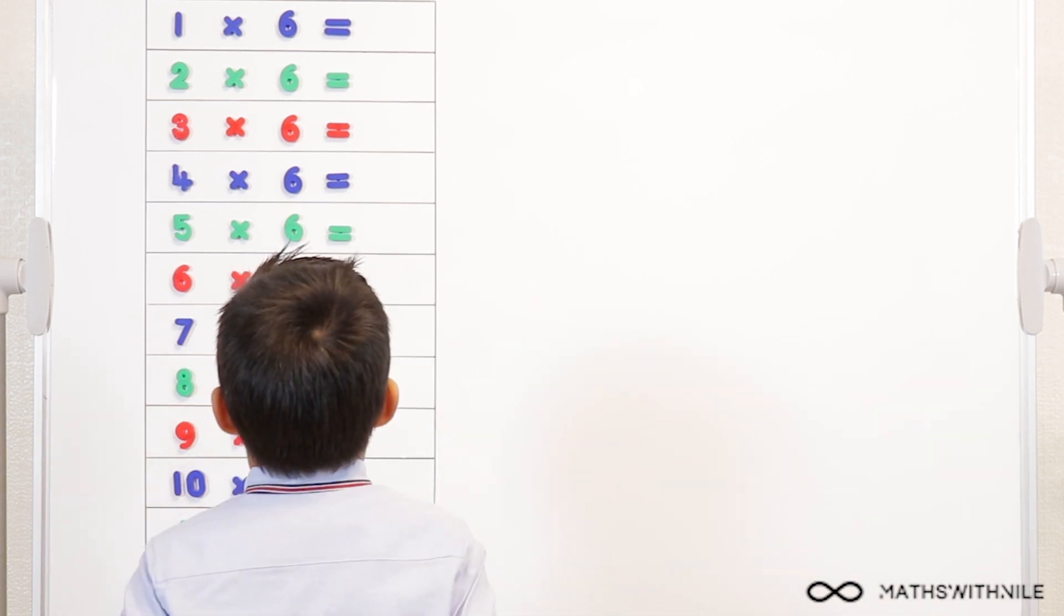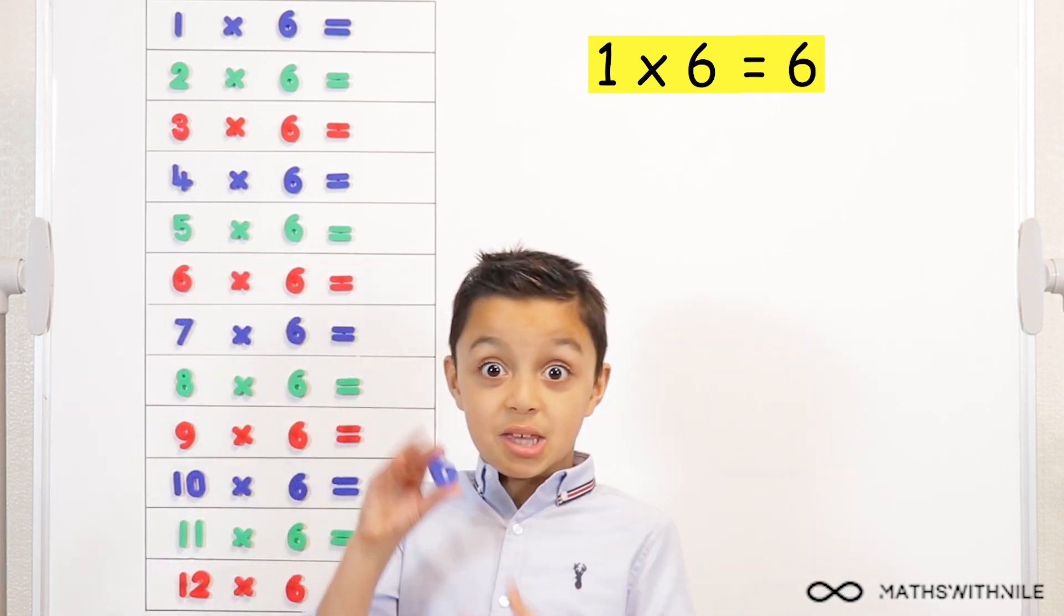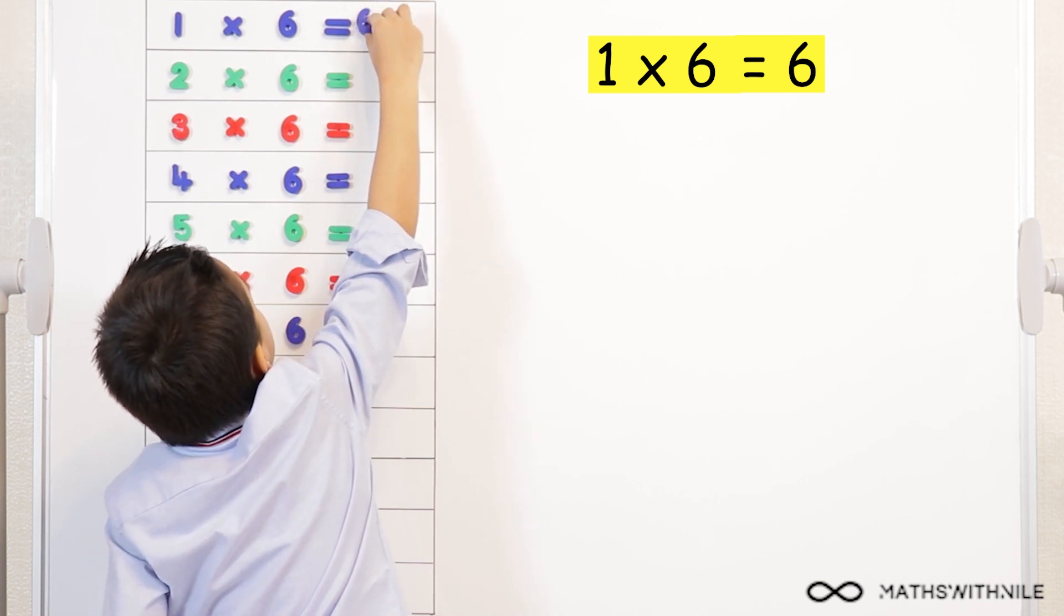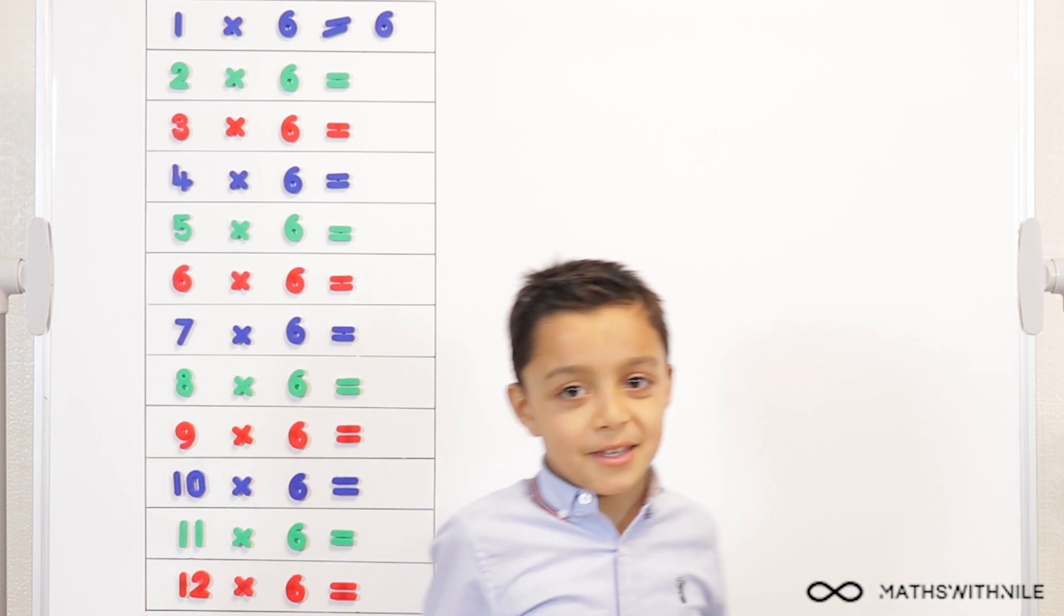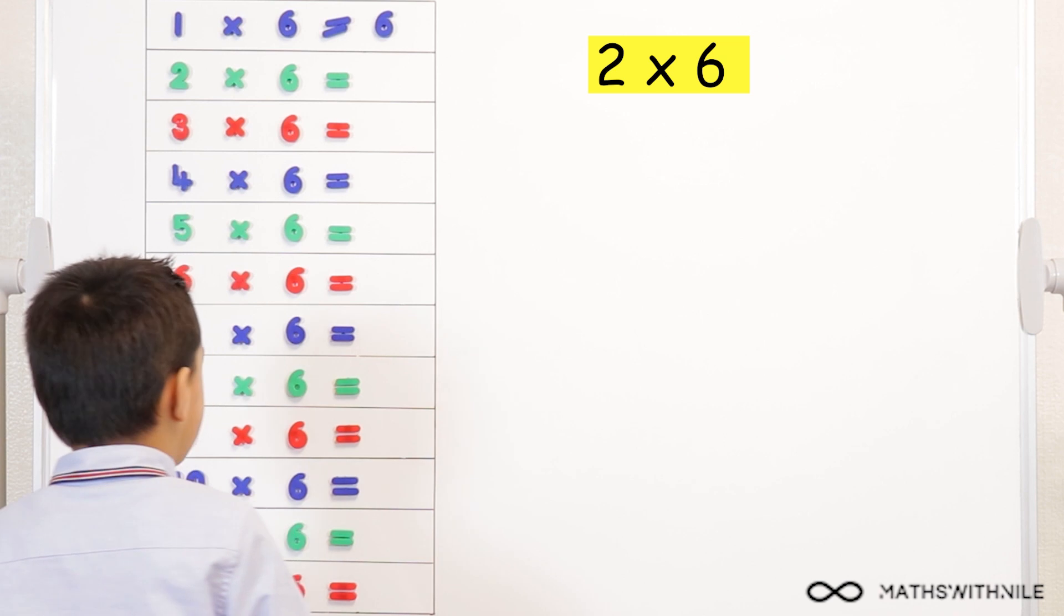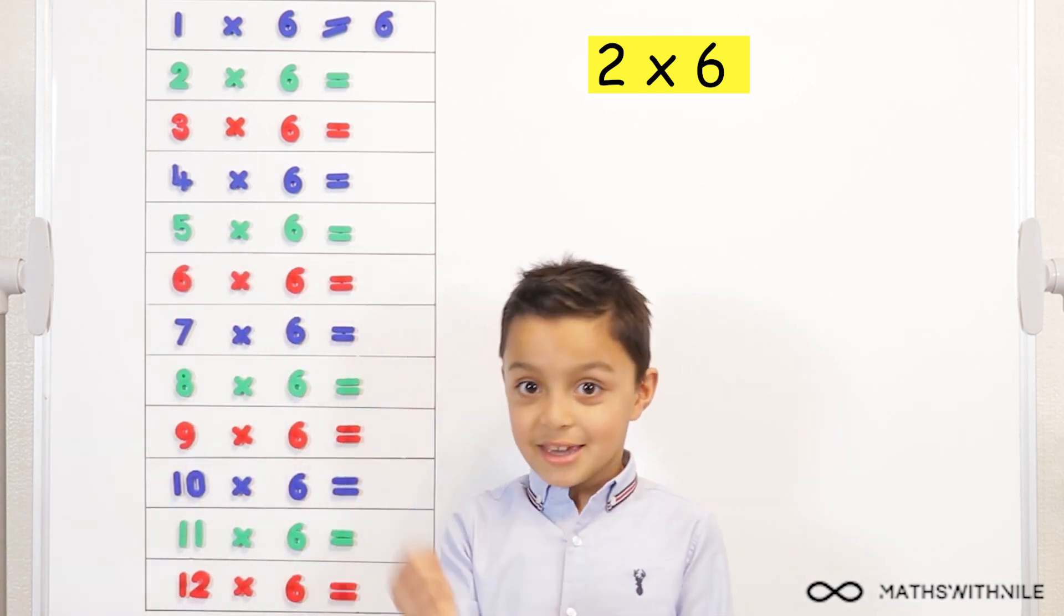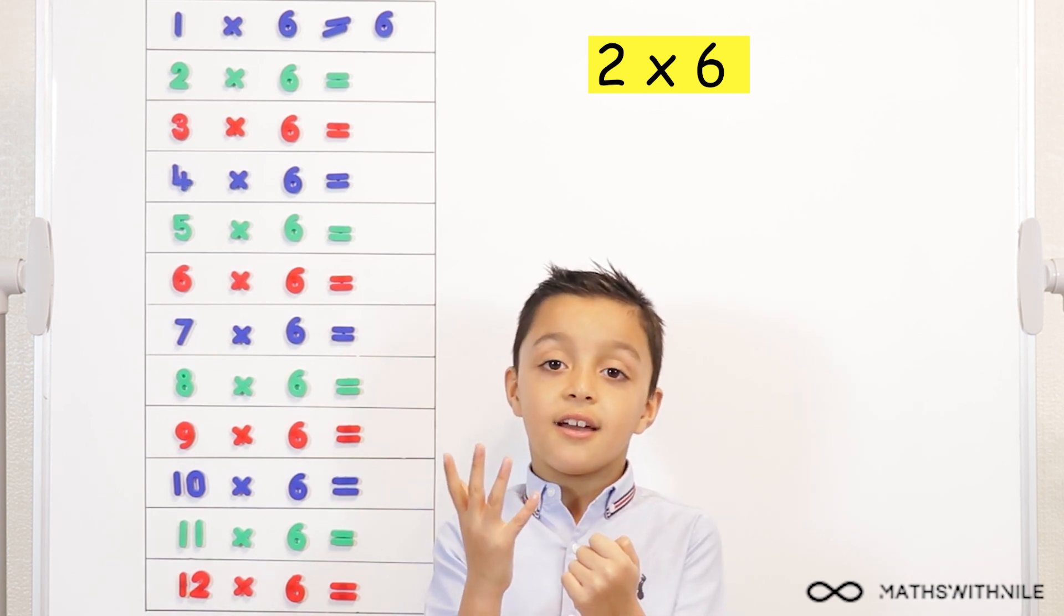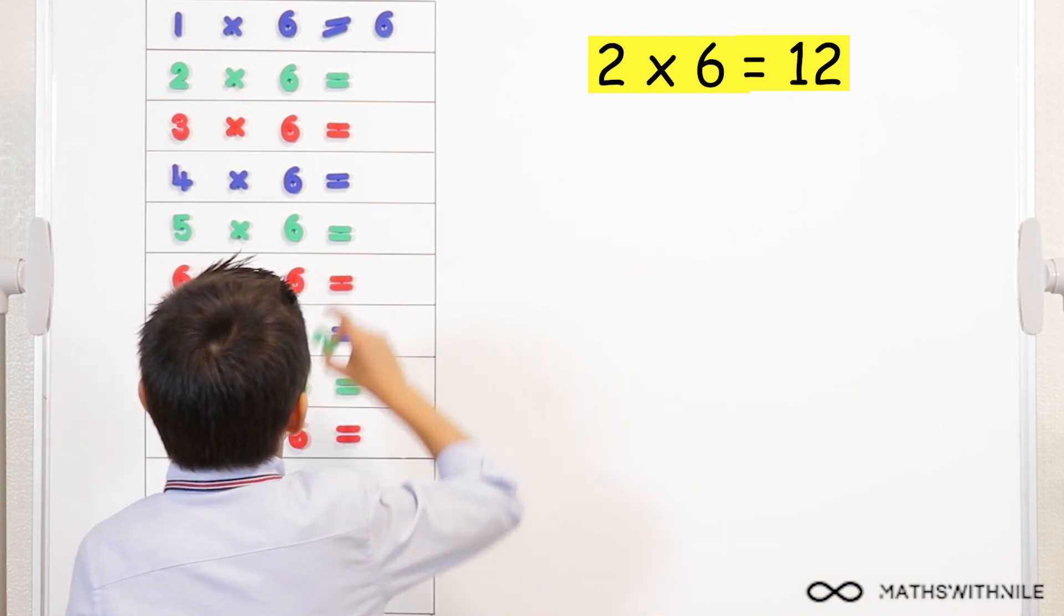Our first question is one times six. Just one little six. So, it equals six. Good job. Oh, I kind of messed up the equals. That's fine. Our second question, two times six. All you have to do is add on six. So, six, seven, eight, nine, ten, eleven, twelve. And the answer is twelve.